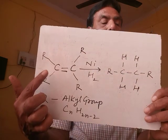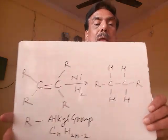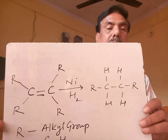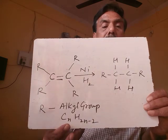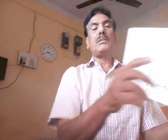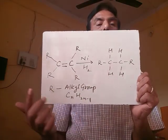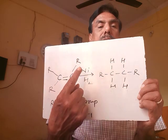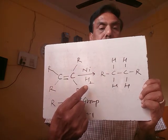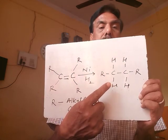This is the unsaturated hydrocarbon, and R is the alkyl group. R may be methyl, ethyl, propyl, or butyl. The formula of this alkyl group is CₙH₂ₙ₋₁. Nickel is the catalyst here, and hydrogen will be added to this reaction to make all single bonds.